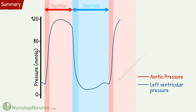Now let's have a quick summary. At the beginning of the ventricular systole, the aortic pressure is at its lowest point. With the opening of the aortic valve and ejection of blood, the pressure in the aorta increases. It even exceeds the pressure in the ventricle. But the inertia of the blood keeps the aortic valve open for a while. Then with decreased ejection, the pressure starts falling.